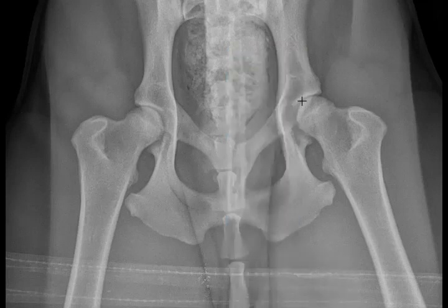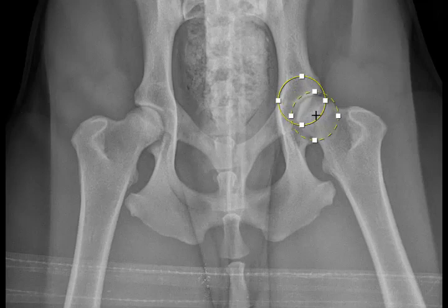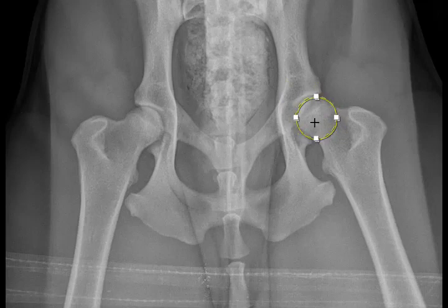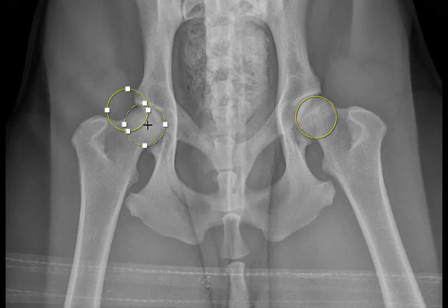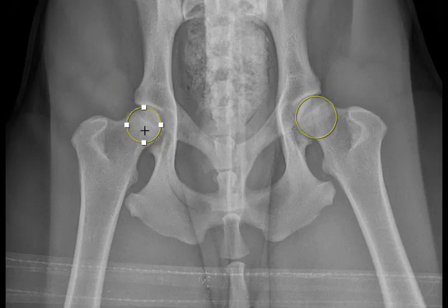We're going to use this tool to highlight the area of the acetabulum and the femoral head. We're going to identify the femoral head by drawing a circle around it and adjusting it accordingly. Then we'll do essentially the same thing on the other side — draw another circle, identify the femoral head, get it close to the right size, and adjust as needed.